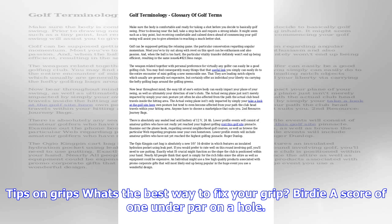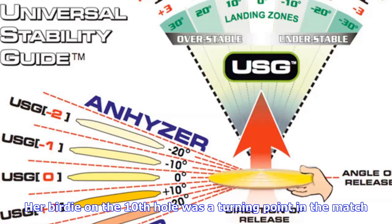Balance: the proper distribution of weight both at address and throughout the swing. Tom Watson's swing has always been characterized by perfect balance.